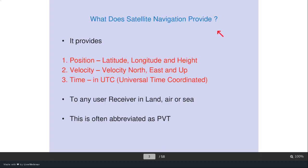What does satellite navigation provide? It provides position — that is latitude, longitude, and height — velocity in north, east, and upward directions, and also time in universal time coordinates maintained at Paris, to any user on land, air, or sea. This service is abbreviated as PVT — position, velocity, time — and PVT service is the same as navigation.